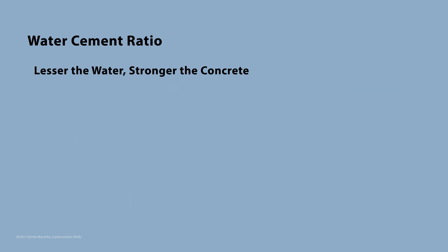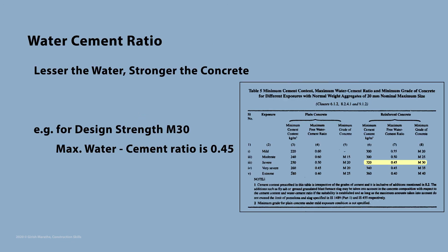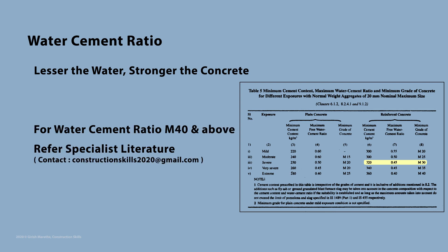Water cement ratio is the most important characteristic of concrete mix design. We have already seen that lower the water content, stronger the concrete. Water cement ratio for concrete up to M40 grades can be estimated using Table 5 of IS 456 code, as can be seen. For example, if design strength is M30, maximum water cement ratio is 0.45. For design strengths above M40, specialist literature shall be required.